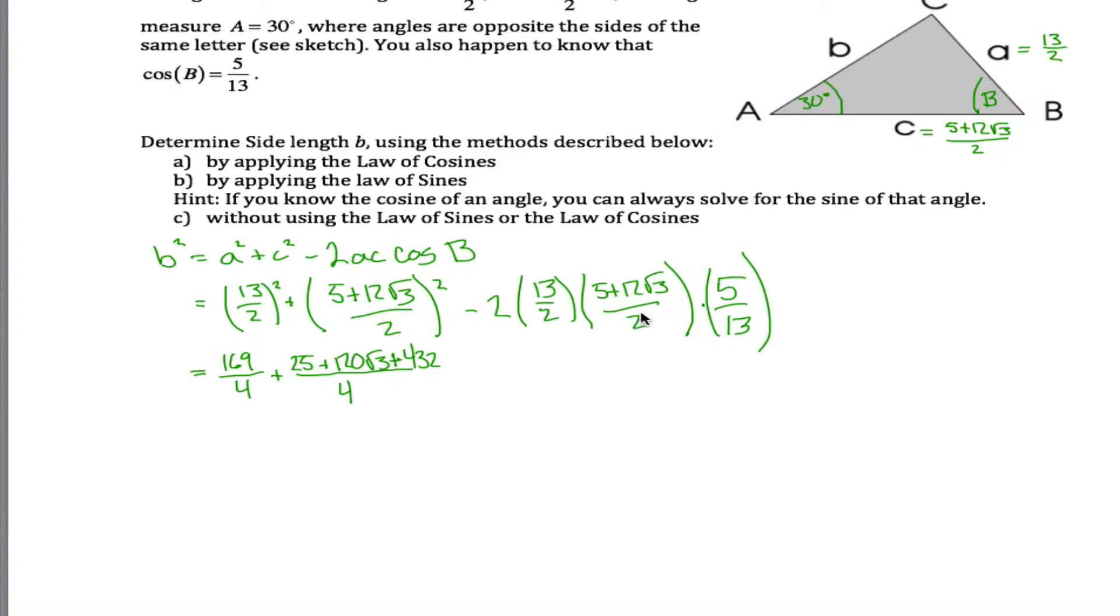Anyways, multiplying these guys together, you could just multiply straight across. But if you notice, this 13 and this 13 over here will cancel each other out. And this 2 and this 2 will cancel each other out. So really, all I'm going to have is this entire thing, this is gone, this entire thing is gone, and this is gone. So I get 25 plus 60 root 3 divided by 2.